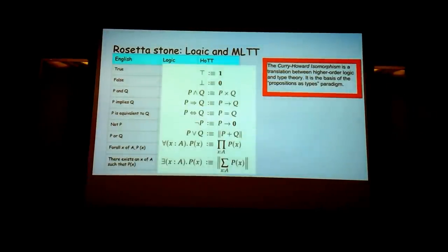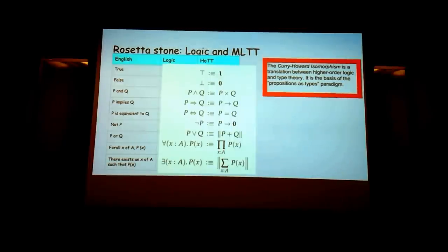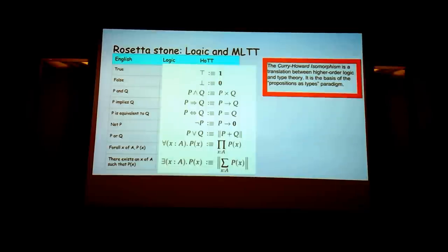It seems like an arbitrary restriction that does nothing to help you, but it means type checking and proof checking are two names for the same process. It's like Haskell's well-typed programs can't go wrong, but on steroids. So, a quick comparison of types and logic: true is equal to the type with one element. P and Q is a tuple of P and Q. Implication is just a normal function. P or Q is an enumeration.